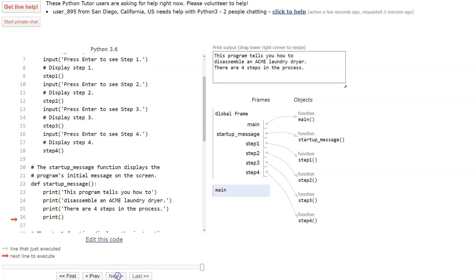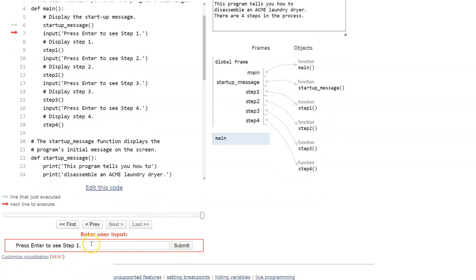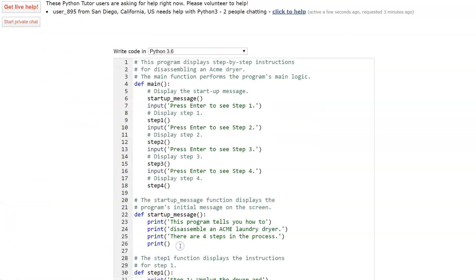When it's done, goes back up here. We go press enter to see step one. So that is going to appear down here: press enter to see step one. Well we're just going to do that and then hit submit and we've got that piece in there.